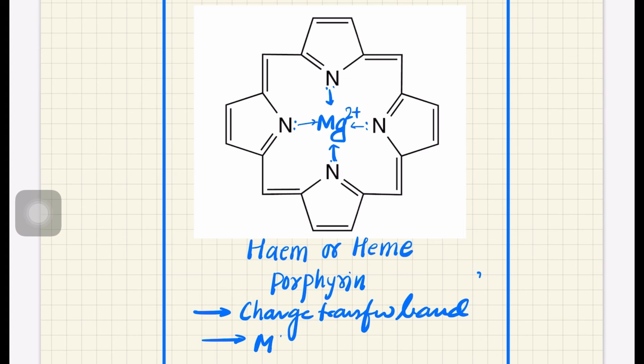So there is a charge transfer from this metal to the ligand, and that charge transfer is causing the color, and that's the reason chlorophyll is green in color.